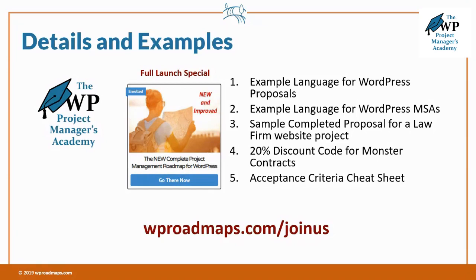The done-for-you downloads for dealing with your scope statement include more example language for your proposal, more example language for your MSA, a sample completed proposal for a law firm website project, and inside the premium membership there's a 20% discount code for Monster Contracts. There's also an acceptance criteria cheat sheet where I give you sample acceptance criteria for all those different deliverables, which can be really helpful.